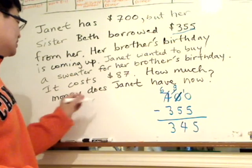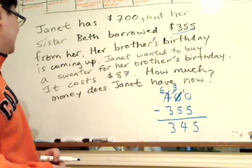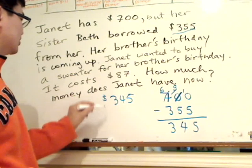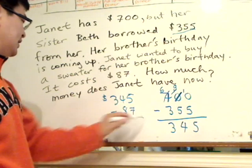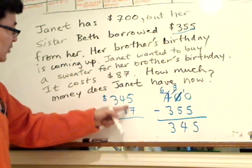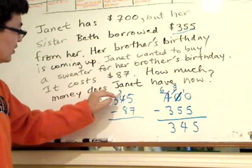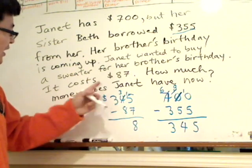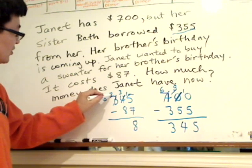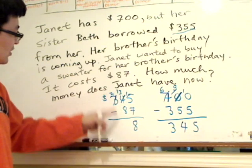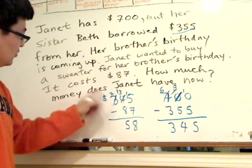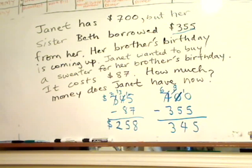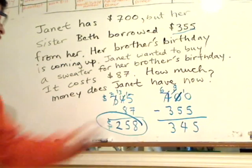She's being a good sister — she's going to buy a sweater for her brother. So $345 minus $87: the ones digit is smaller than the bottom, so we borrow from the $4, which becomes $3, and the ones place becomes $15. $15 minus $7 is $8. Then $3 minus $8 requires borrowing from the hundreds — the $3 becomes $2, ones place becomes $13. $13 minus $8 is $5. Bring down the $2. She still has $258 left — that's her remaining money.